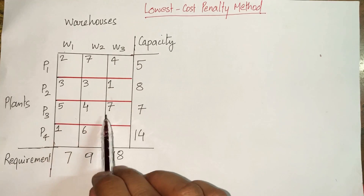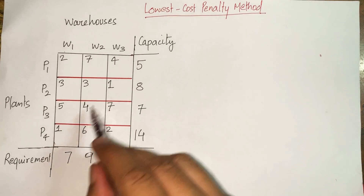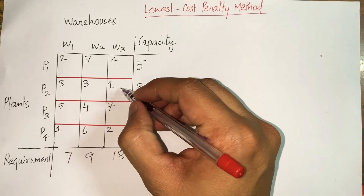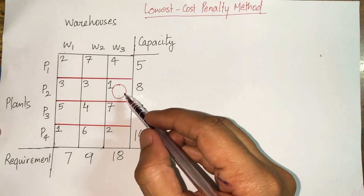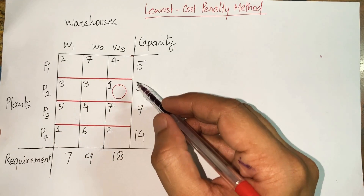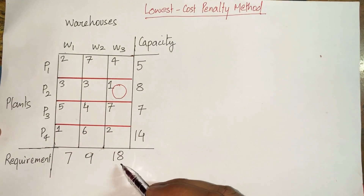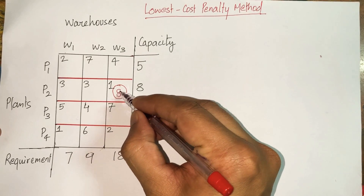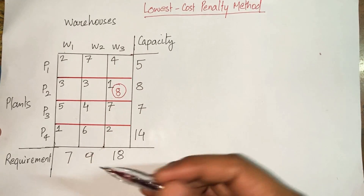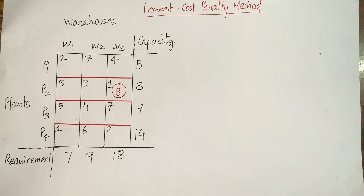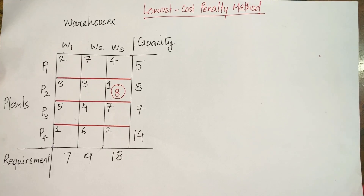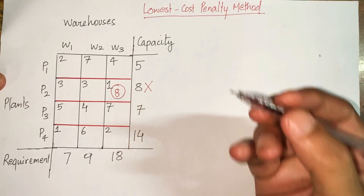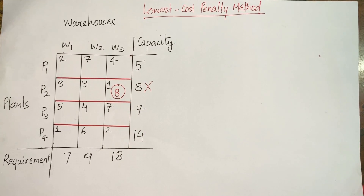Looking at the transportation costs, the minimum cost cell has a cost of 1, and there are two such cells. I select one of them. The capacity of plant P2 is 8 units and the requirement at warehouse W3 is 18, so I can only supply 8 units — the minimum of supply and demand. Plant P2's full capacity of 8 units has now been consumed and it has no further role in the solution.